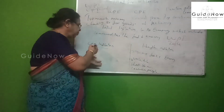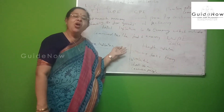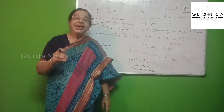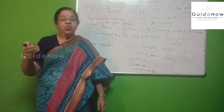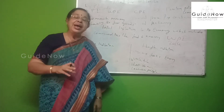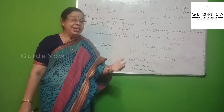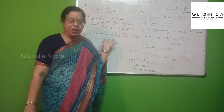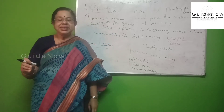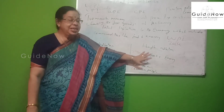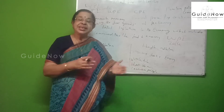Another concept is core inflation. Core inflation is just the opposite of headline inflation. Core inflation equals headline inflation minus food and energy. If we exclude food and energy from headline inflation, that is equal to core inflation. So food and energy items are excluded from core inflation.